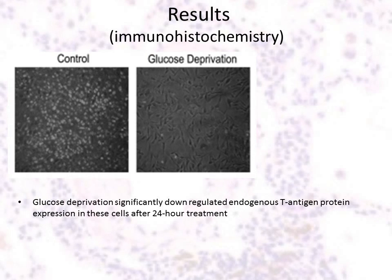This is the result we obtained from the immunohistochemistry. Since tumor cells utilize glucose at an increased rate, we investigated the effect of glucose deprivation on T antigen expression. Comparing the immunohistochemistry results, we can see that cells kept in control conditions had more expressed T antigen protein, whereas cells that were glucose deprived had less or no protein expression.